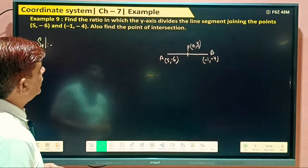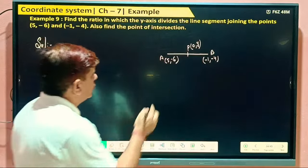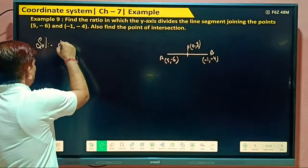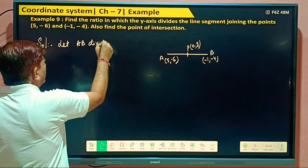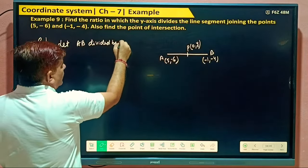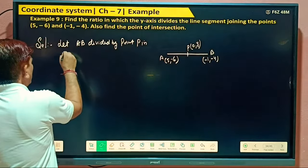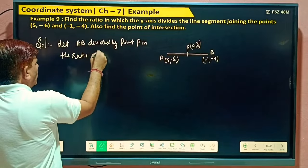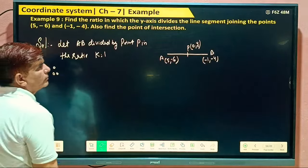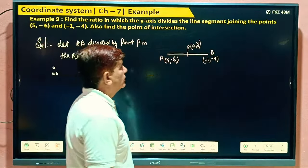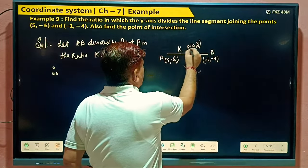Also find the point of intersection. So find the ratio, ratio you have to find out. So again we can say let A be divided by point P in the ratio, in the ratio K raise to 1. Therefore, what? This is K and this is raised to 1.